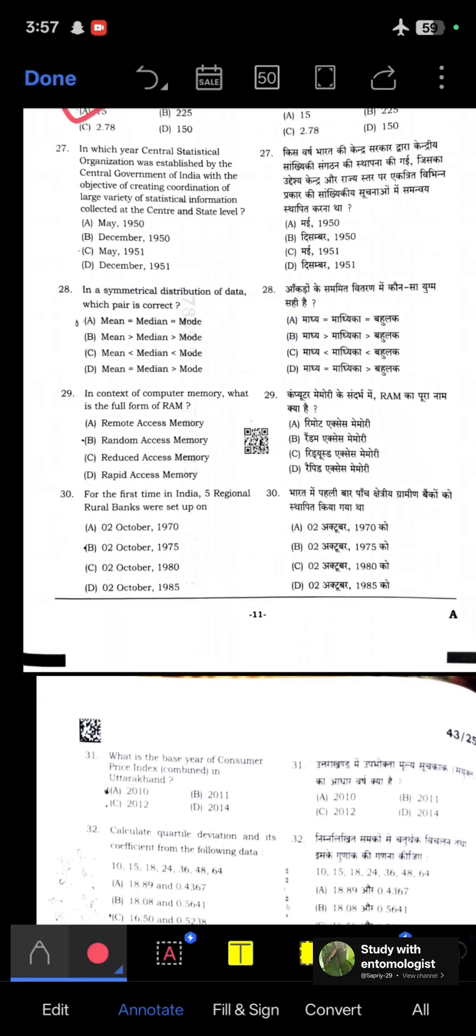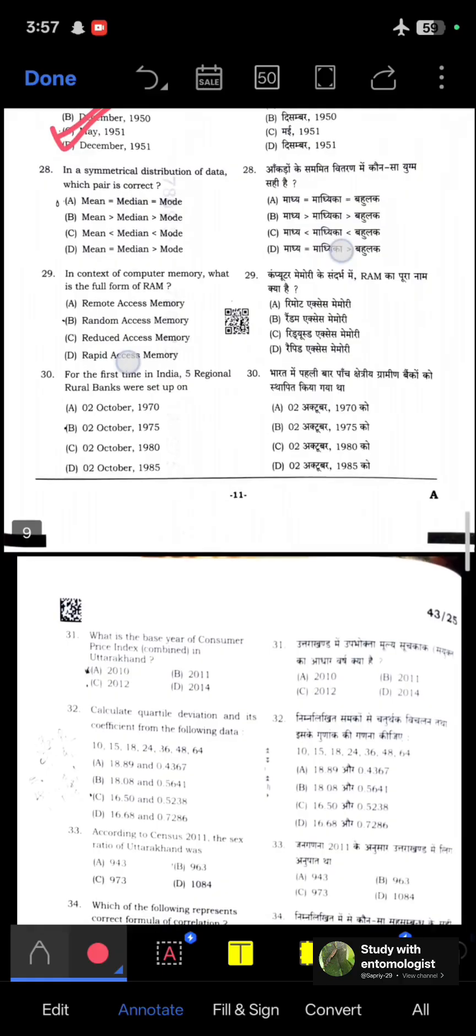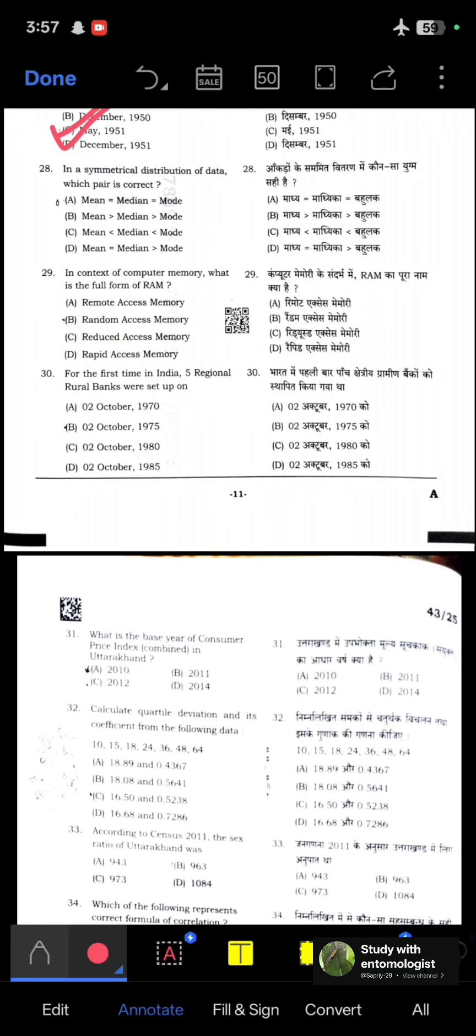In which year was the Central Statistical Organization established by the central government of India with the objective of creating coordination of large variety of statistical information collected at central and state level? This organization was established in May 1951. Option C is correct. In a symmetrical distribution of data, which pair is correct? Symmetrical distribution means all are equal, so mean equals median equals mode.